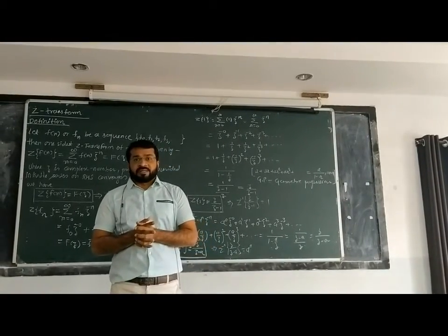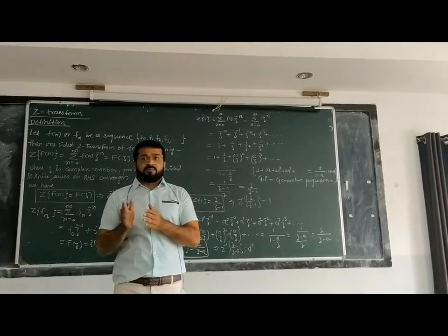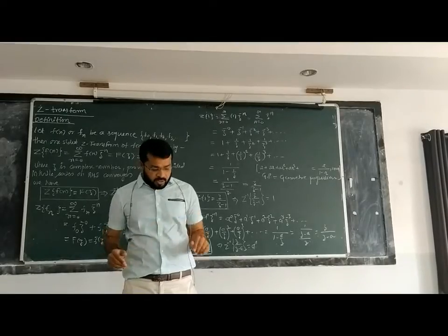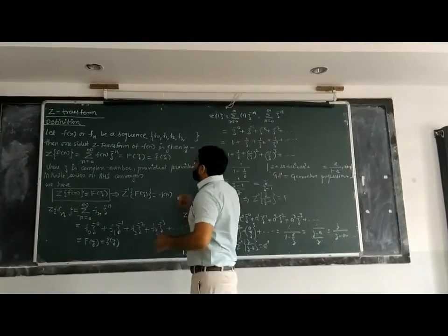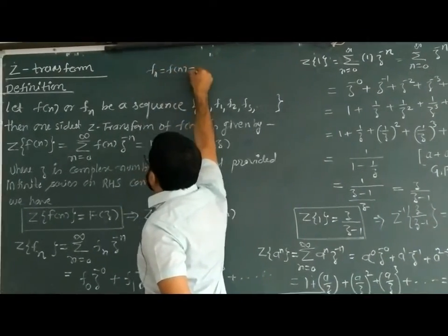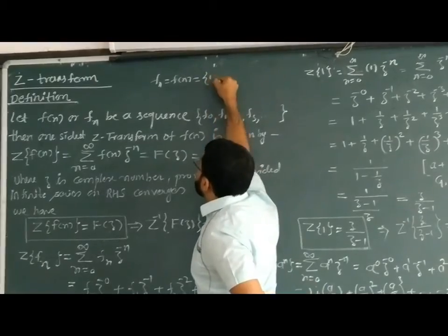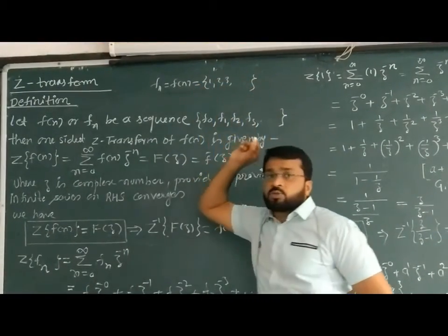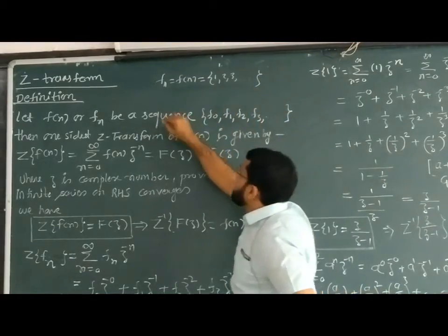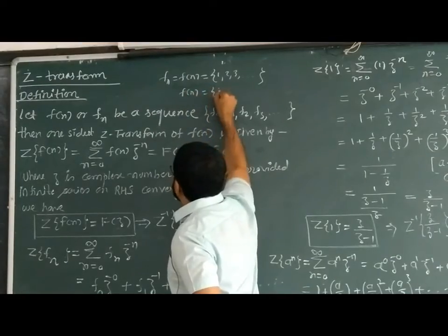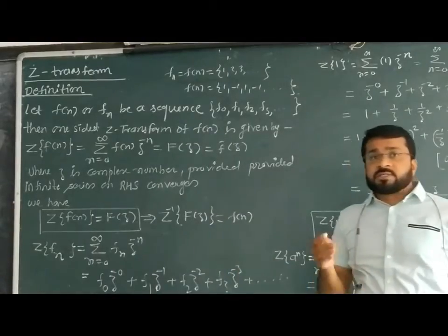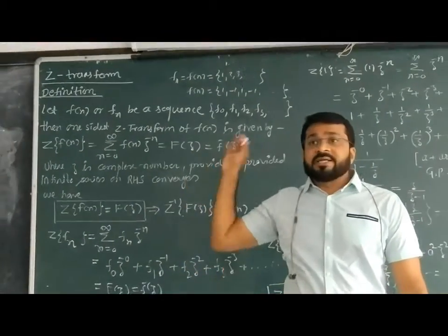Today the new topic is the Z-transform. The Z-transform is defined over a sequence, and sequences are always discrete in nature. For example, a sequence f(n) could be 1, 2, 3, and so on — the set of natural numbers. Similarly, f(n) could be 1, -1, 1, -1, and so on. These are discrete in nature.